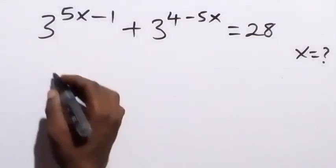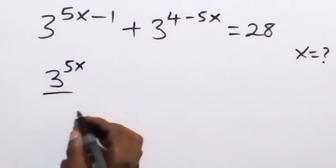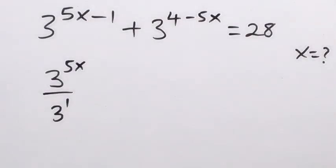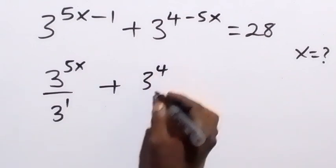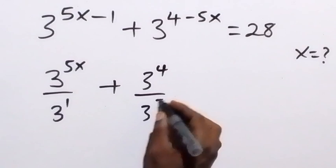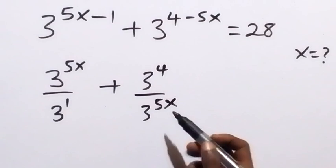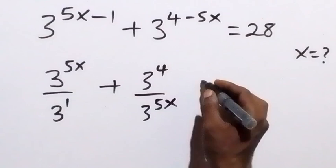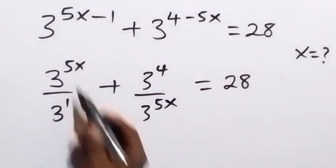We can rewrite this as 3 raised to power 5x divided by 3 raised to power 1, applying the law of indices. Then we have plus 3 raised to power 4 divided by 3 raised to power 5x, also applying the law of indices — when you have numbers of the same base divided, you can subtract their indices. This equals 28.